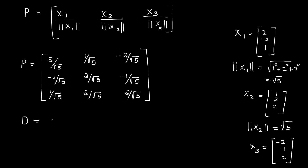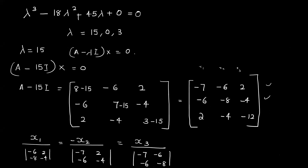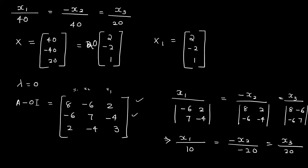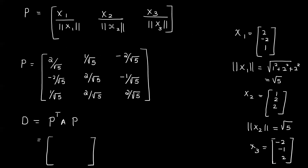P transpose into A into P equals the diagonal matrix. When we add lambda equal to 15, then lambda equal to 0, then lambda equal to 3, those are the diagonal elements: 15, 0, 3. The other off-diagonal values are all zero.